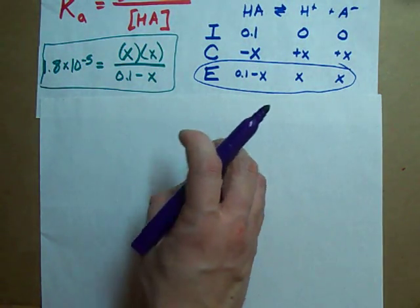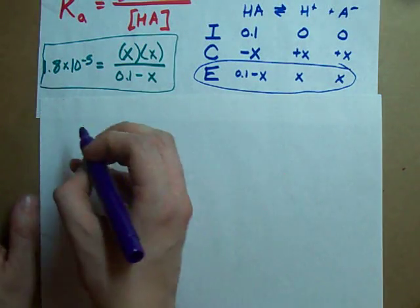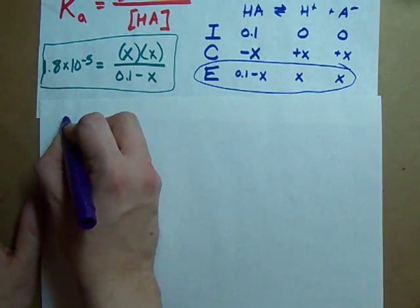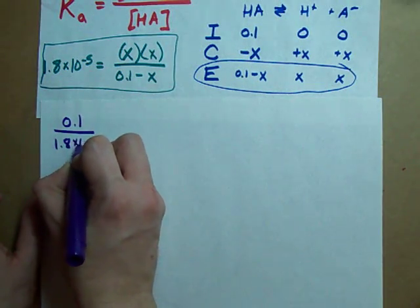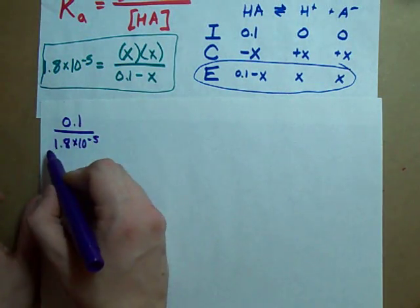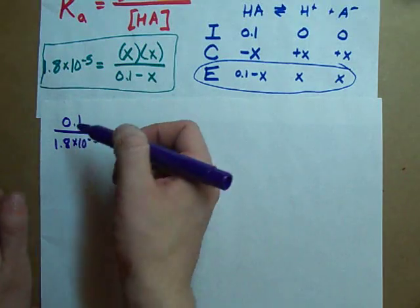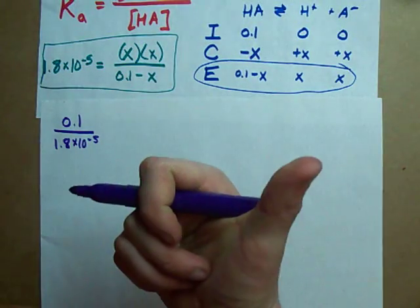Some people use something called the 100 rule, which is where you take your initial concentration, divide it by your Ka, and if this number turns out to be more than 100, you're good to go.